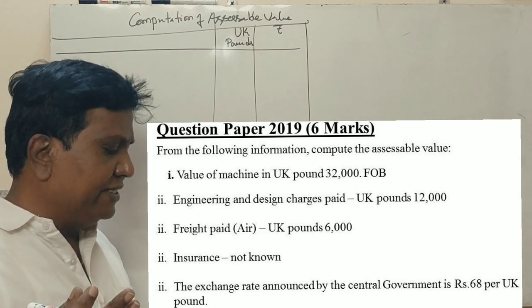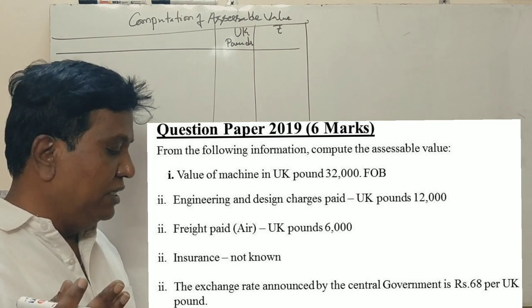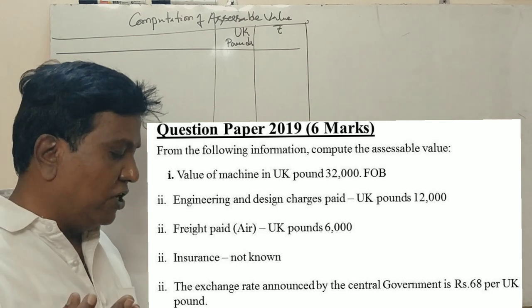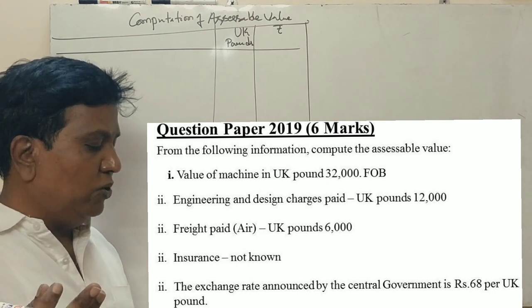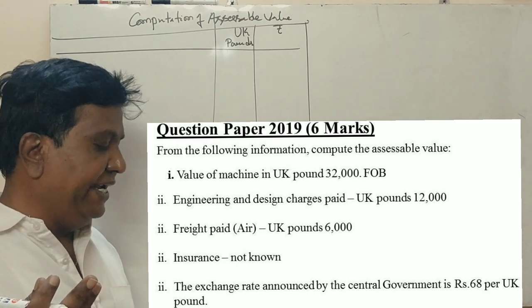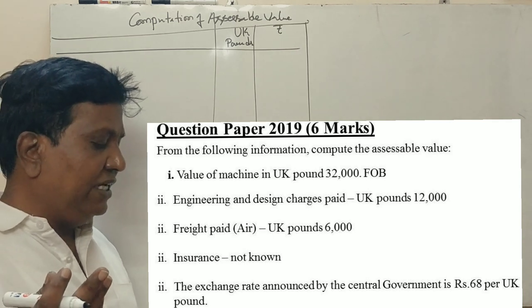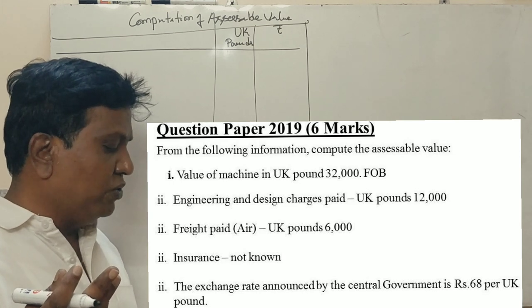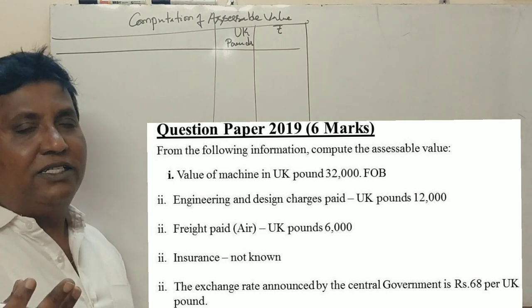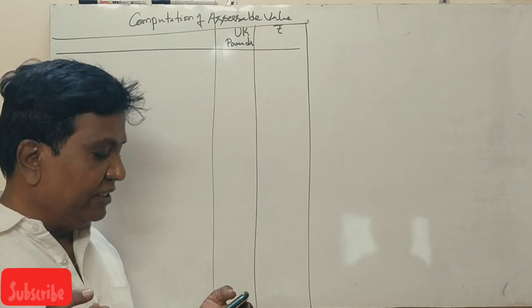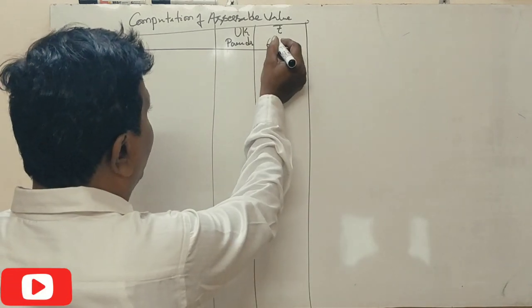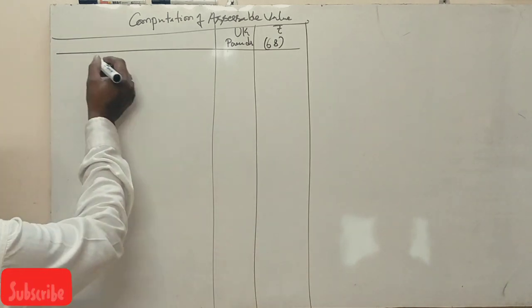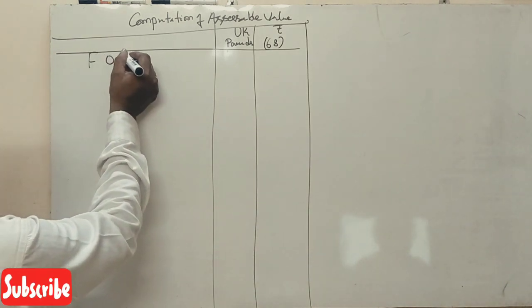Engineering and design charges paid UK pounds 12,000, freight paid UK pounds 6,000, insurance not known, commission payable to local agent 2% on FOB in Indian rupees. Exchange rate announced by central government of India is 68 per UK pound.